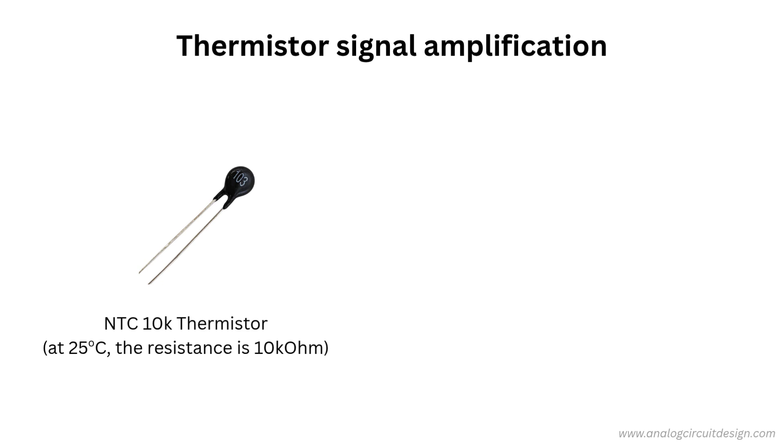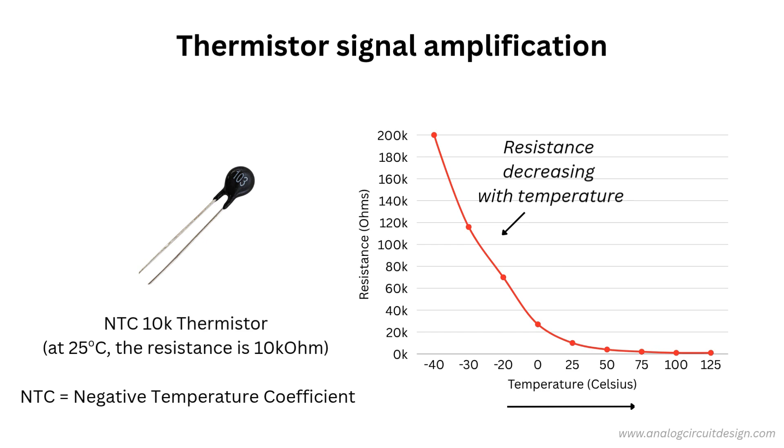We'll use an NTC thermistor as our sensor. NTC stands for negative temperature coefficient, which means as the temperature increases, the resistance of the sensor decreases. At 25 degrees Celsius, this thermistor typically offers a resistance of 10 kilo-ohms. Now here's the important part, we can't directly measure resistance. So instead, we use a voltage divider method, combining the thermistor with a known resistor.